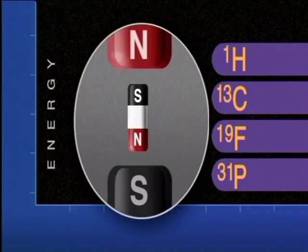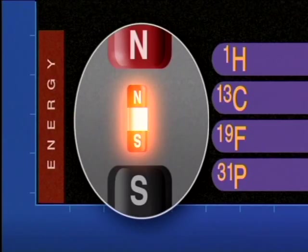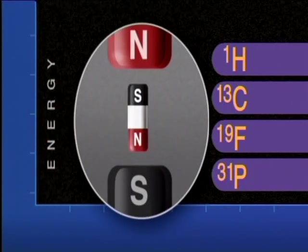Electromagnetic radiation, which has an energy corresponding to the gap between these two states, can cause these nuclear magnets to flip from a low-energy state to a high-energy one. The size of the energy gap determines the frequency of radiation required. Each element has its own particular frequency, but they all lie within the radio part of the spectrum.